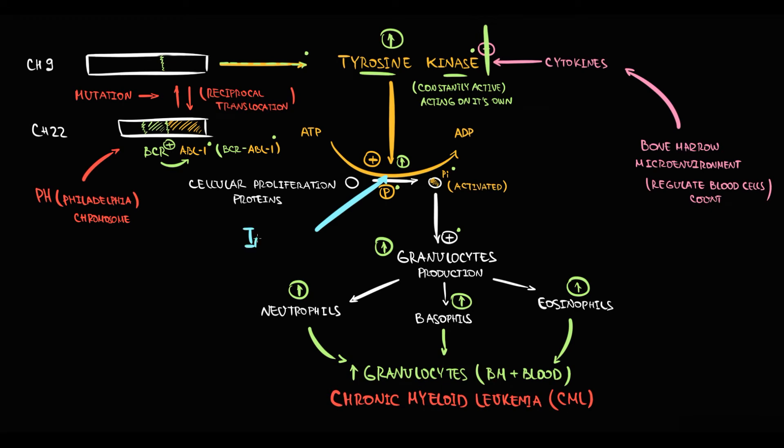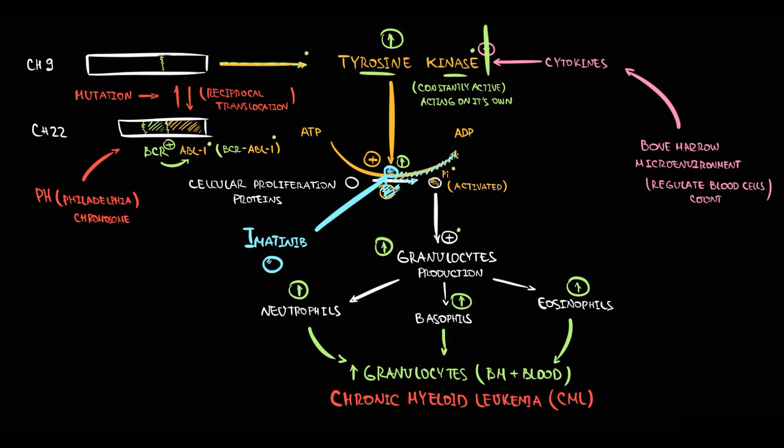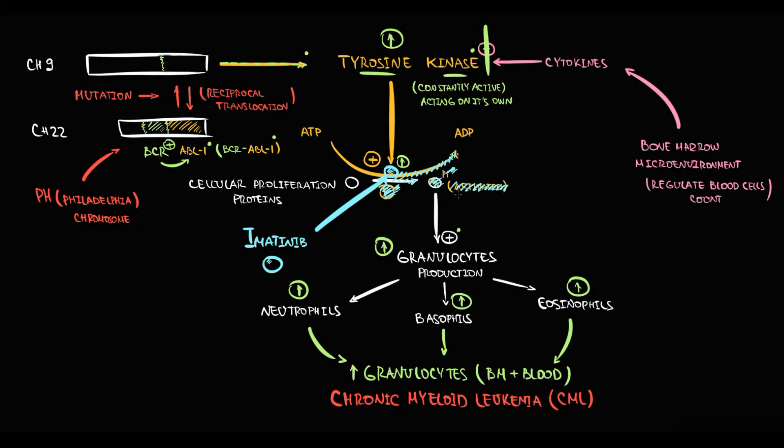Imatinib blocks the ATP binding site on tyrosine kinase. So now ATP molecules cannot bind to tyrosine kinase. Without binding of ATP molecules, phosphorylation becomes impossible. And without phosphorylation, proteins that are responsible for granulocyte proliferation cannot be activated. Thereby granulocyte production will decrease, and with time this will cause decreasing amounts of neutrophils, basophils and eosinophils in the blood. Simple as that.